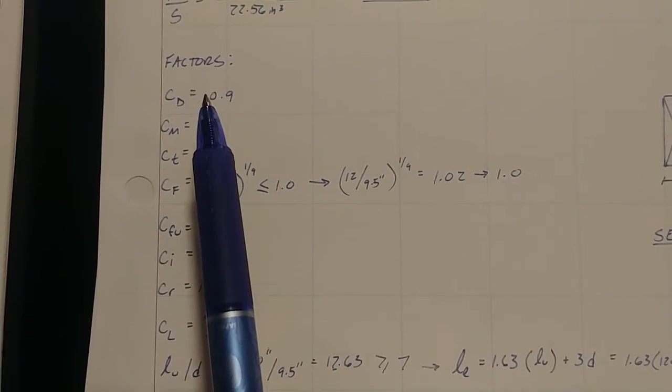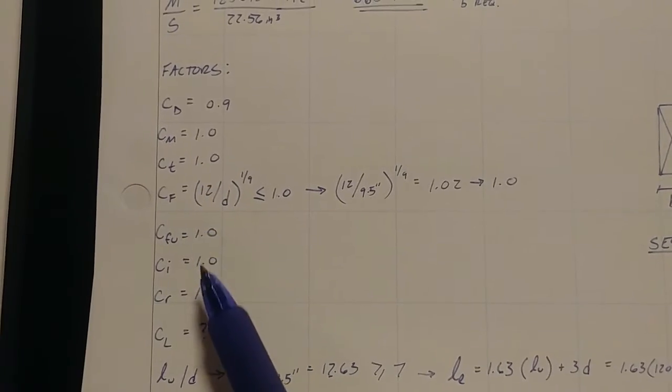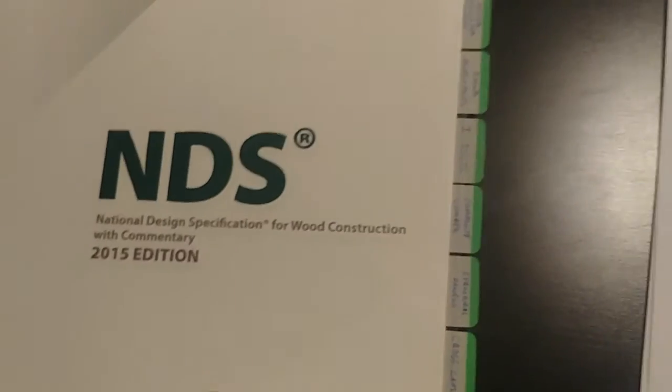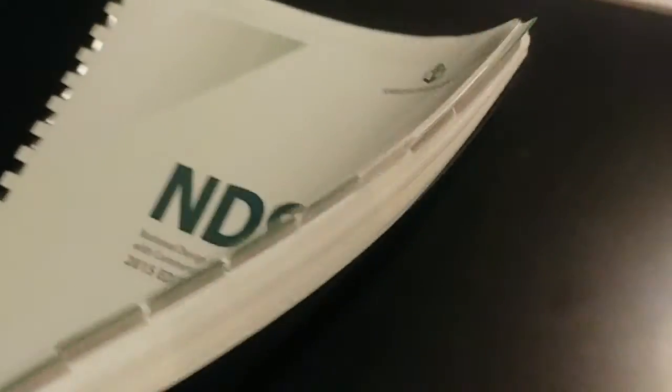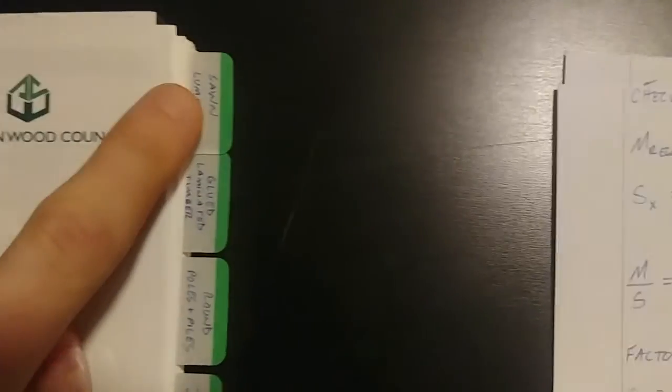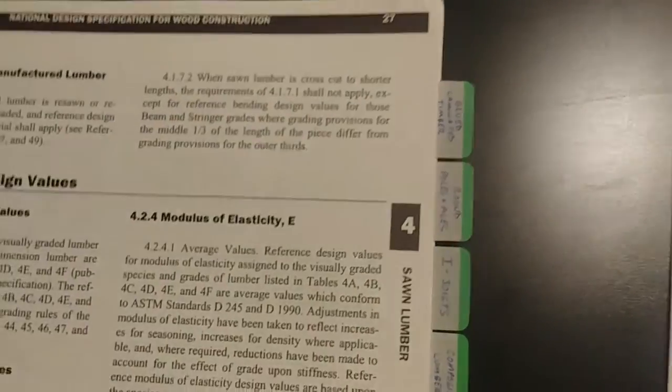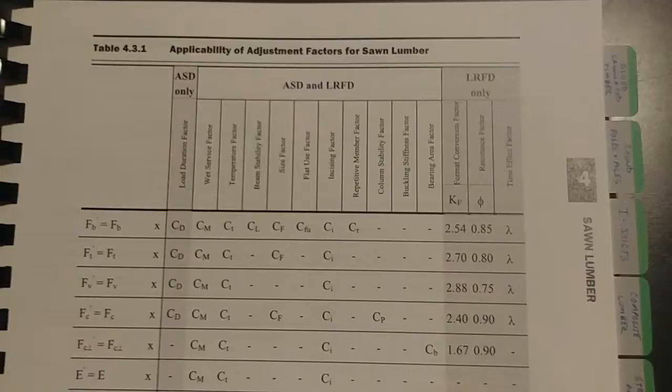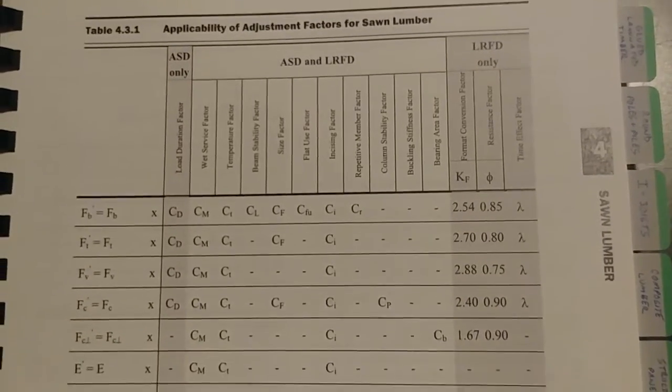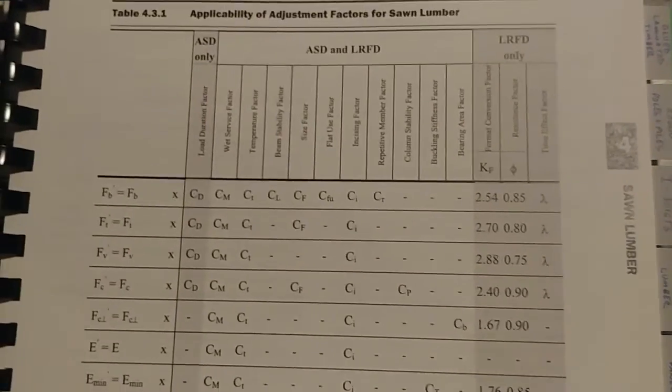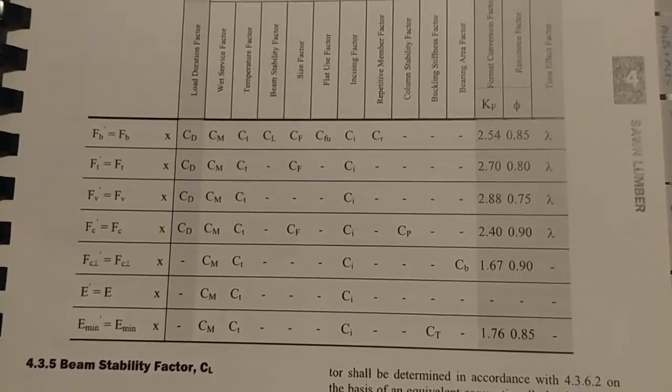Now we get into our factors. So you have, believe it or not, all these different factors for wood design and those come from, so we're going to close our small manual, our supplement. And now we're going to go to the big NDS, the really big one. And we're going to go to, I have it tabbed. So we're going to go to sawn lumber chapter four. And if we flip through a couple of pages, you will come to a chart. And this is all the factors that apply to your different stresses of a wood member.